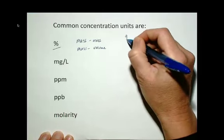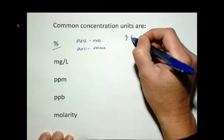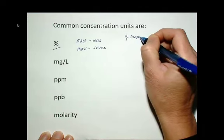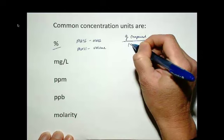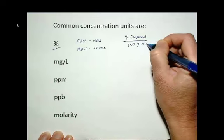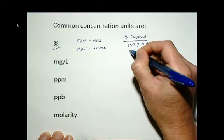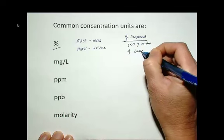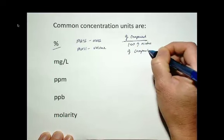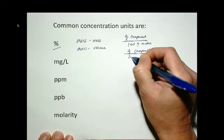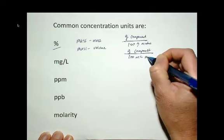And when we talk mass to mass, we're talking about grams of some component of your mixture per 100 grams of the total mixture. And for the mass volume, it's the grams of whatever component you're talking about per 100 milliliters of the mixture.